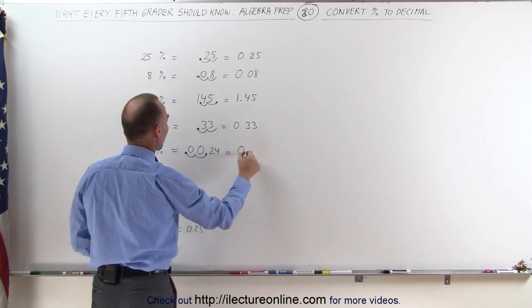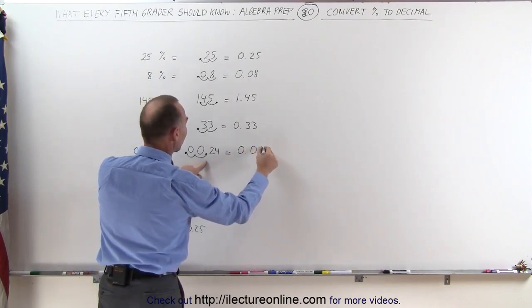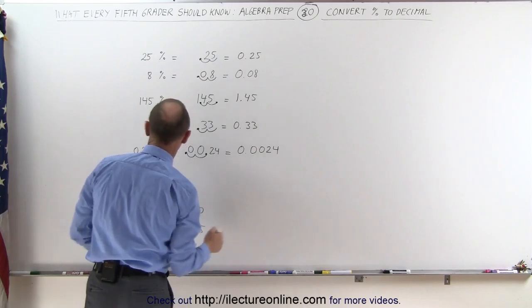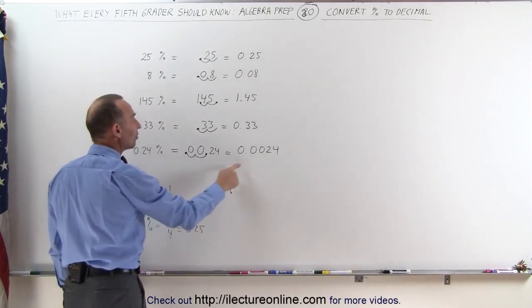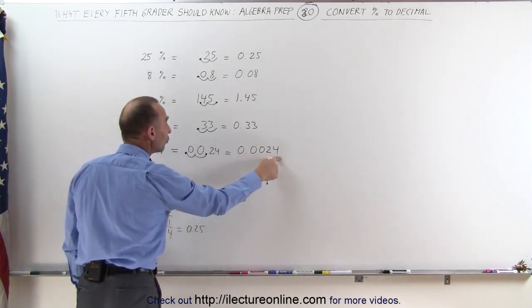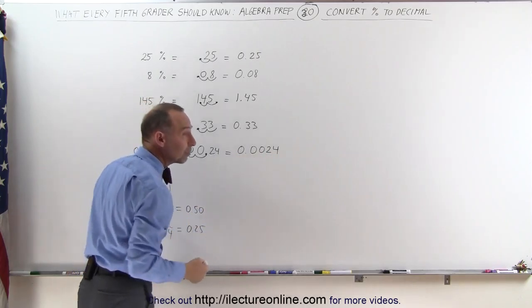and therefore we can write this as 0.0024. 0.24% is the same as 0.0024. We simply move the decimal place over two spots,